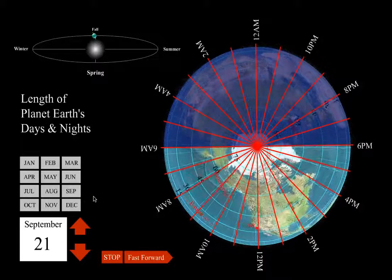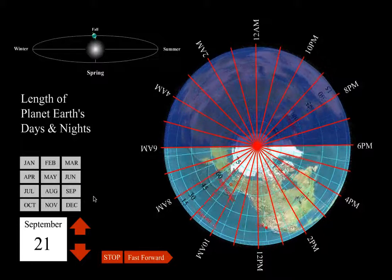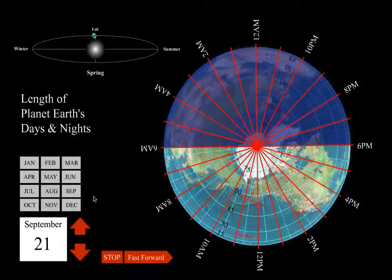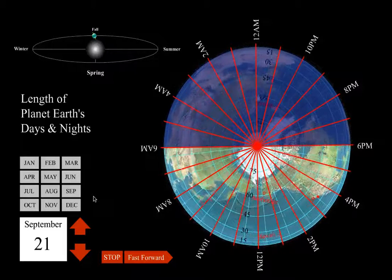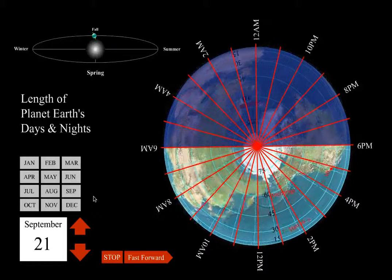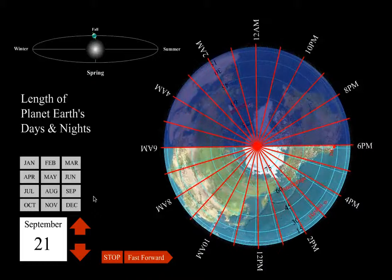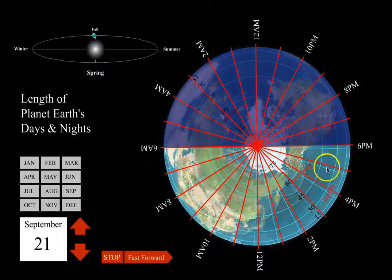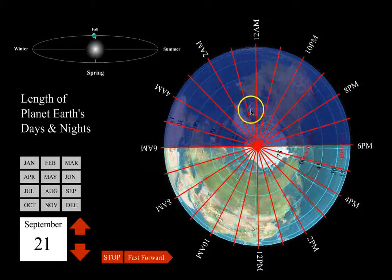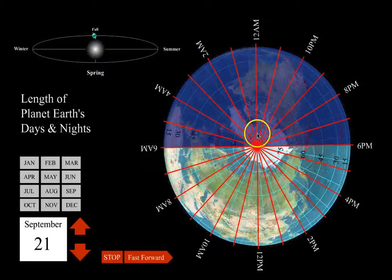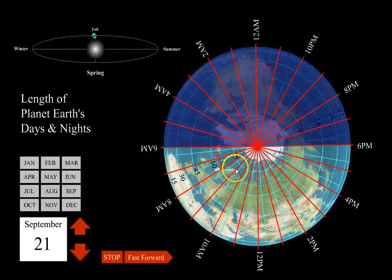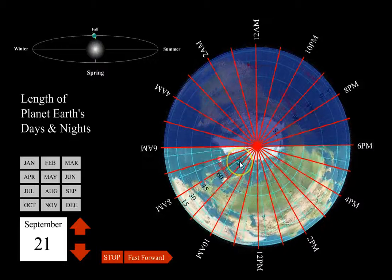In this animation we're going to be watching how the length of day, or the duration of insolation, changes at different latitudes for different seasons. Here we have an overhead view of the earth — a polar view — and this is the North Pole, and we can see some select latitudes here.